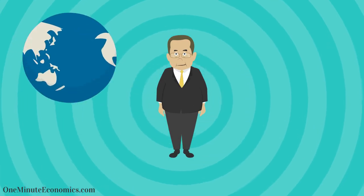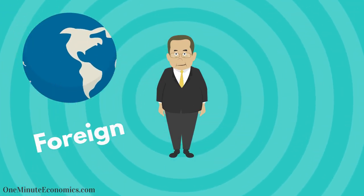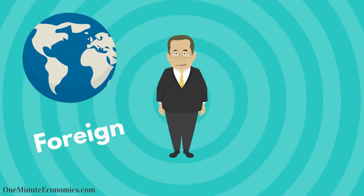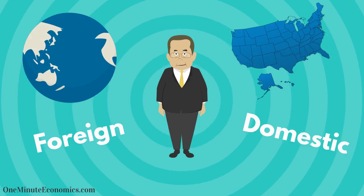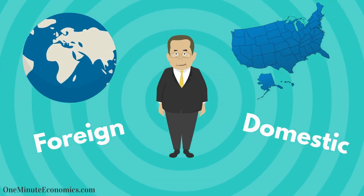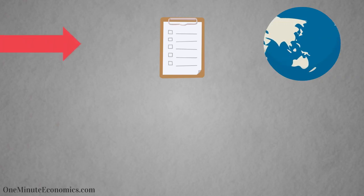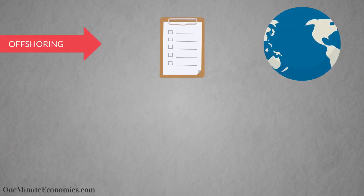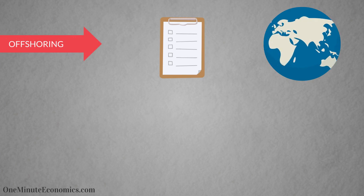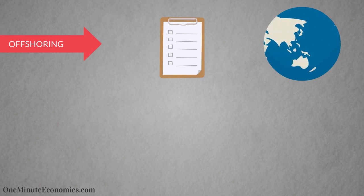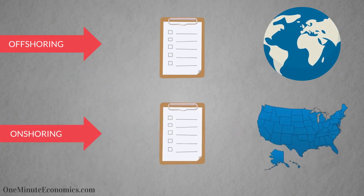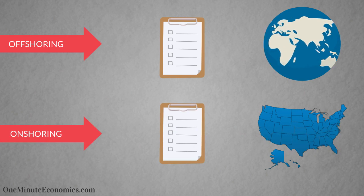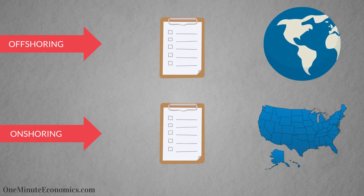Many believe outsourcing has to involve hiring foreign companies, but that is incorrect. One can outsource to domestic as well as foreign entities. The term you should use to describe the delegation of certain tasks abroad is offshoring, whereas the term for delegation within the same country is onshoring.